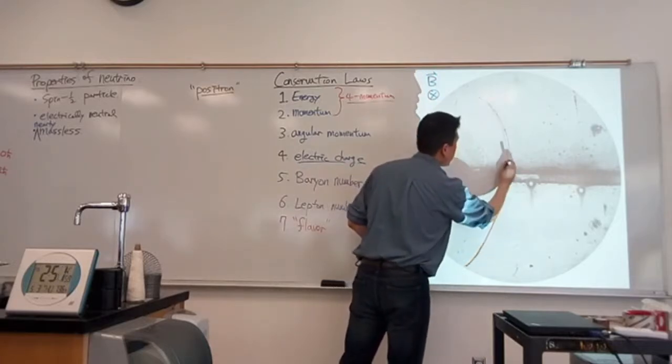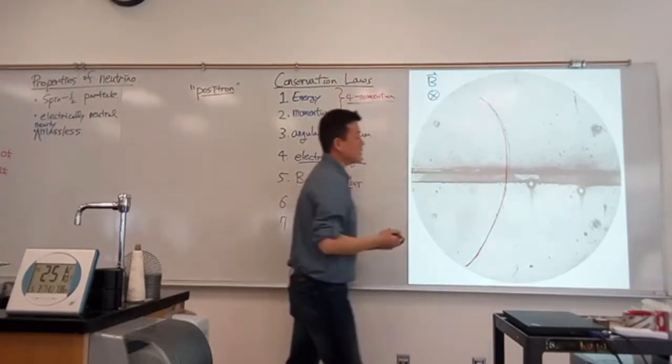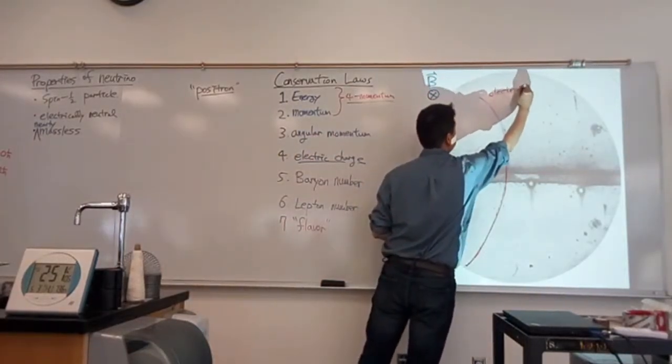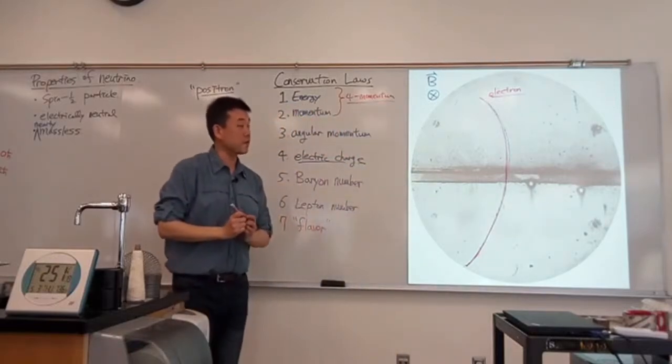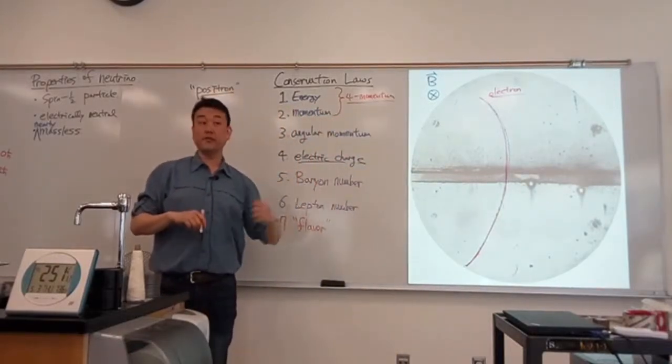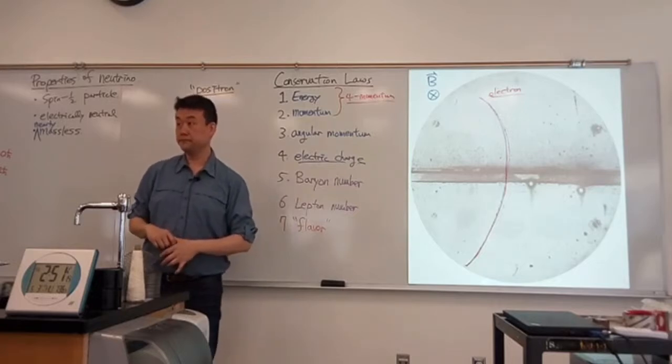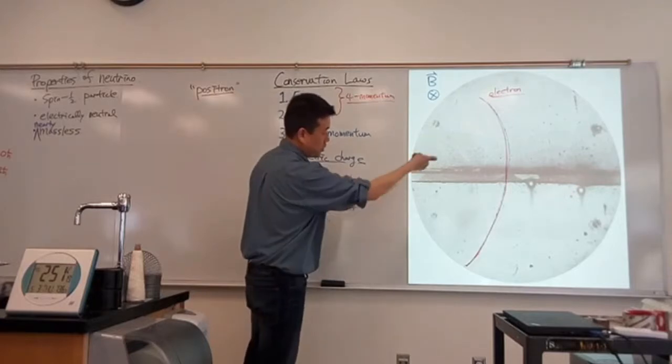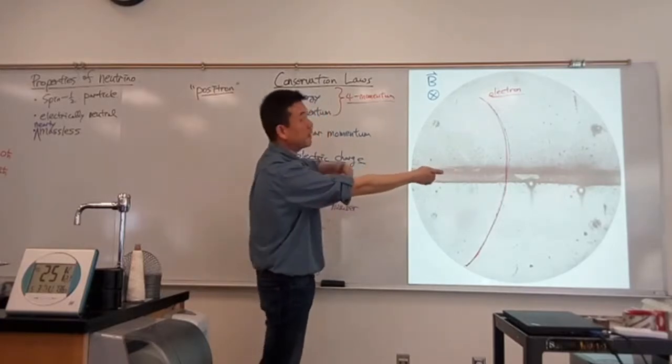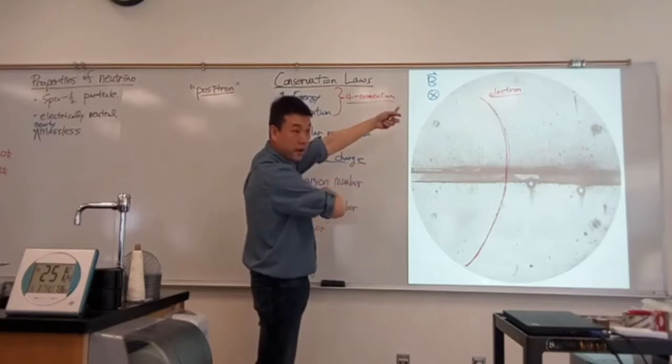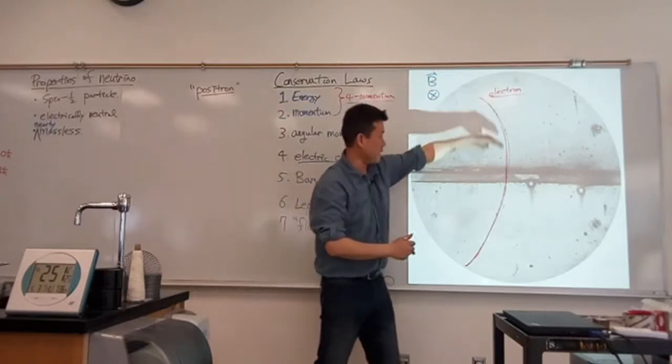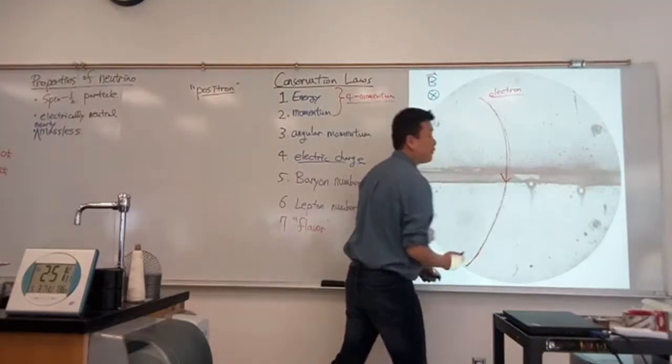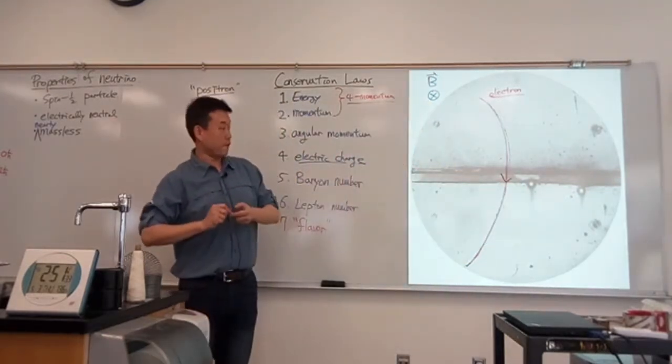Now suppose I told you that this particle is an electron. What direction is this electron traveling in? Downward, right? Because V cross B that way goes to the right. But the electron is negatively charged, so the force actually points to the left, consistent with this leftward curve. So if this was an electron, it would be moving downwards. So far, no discovery.